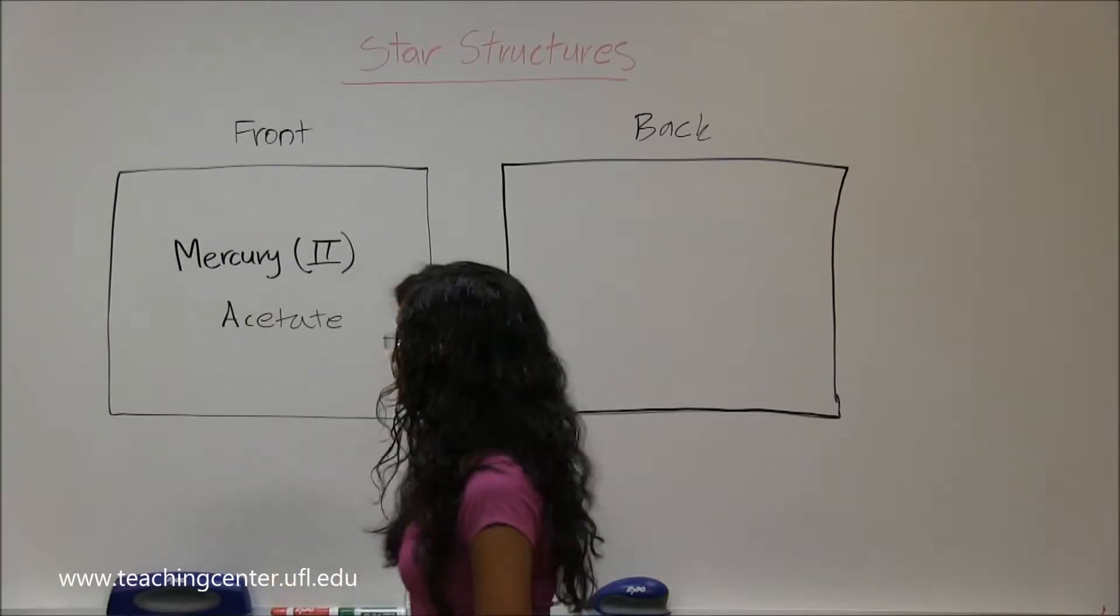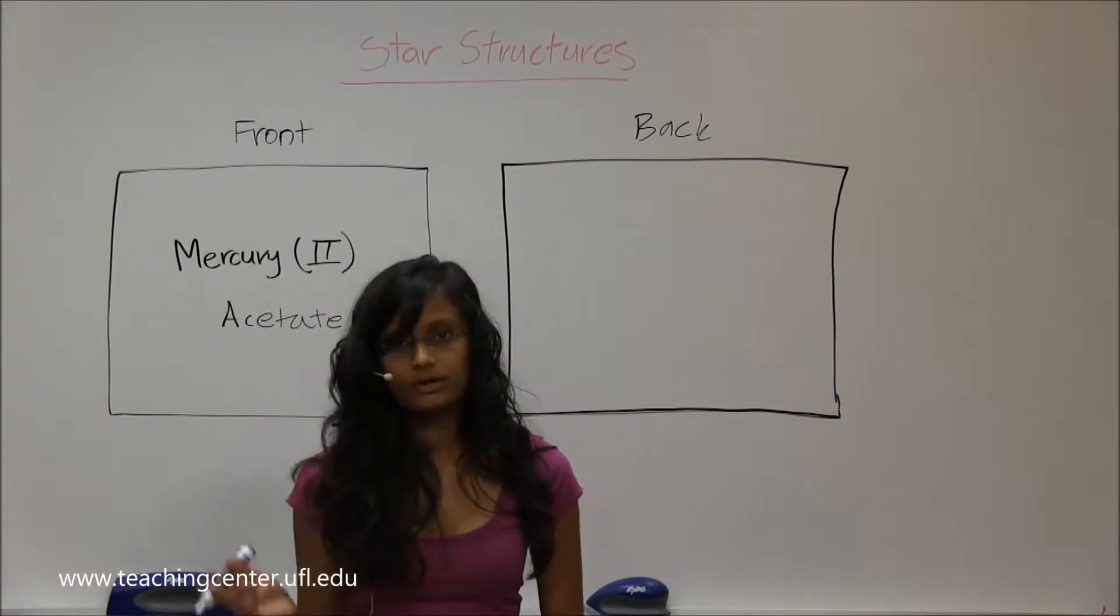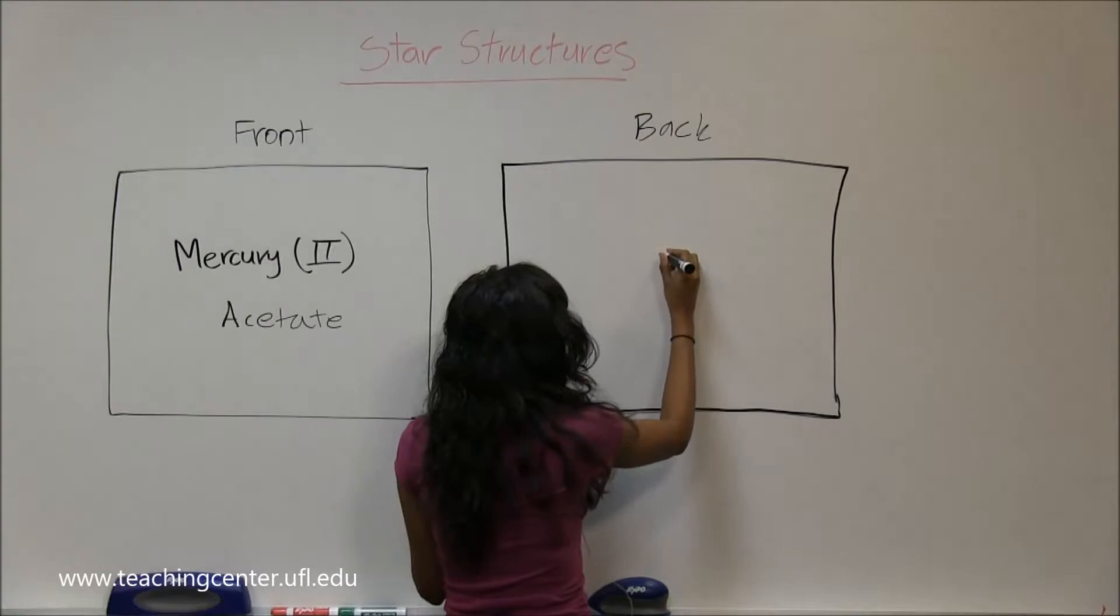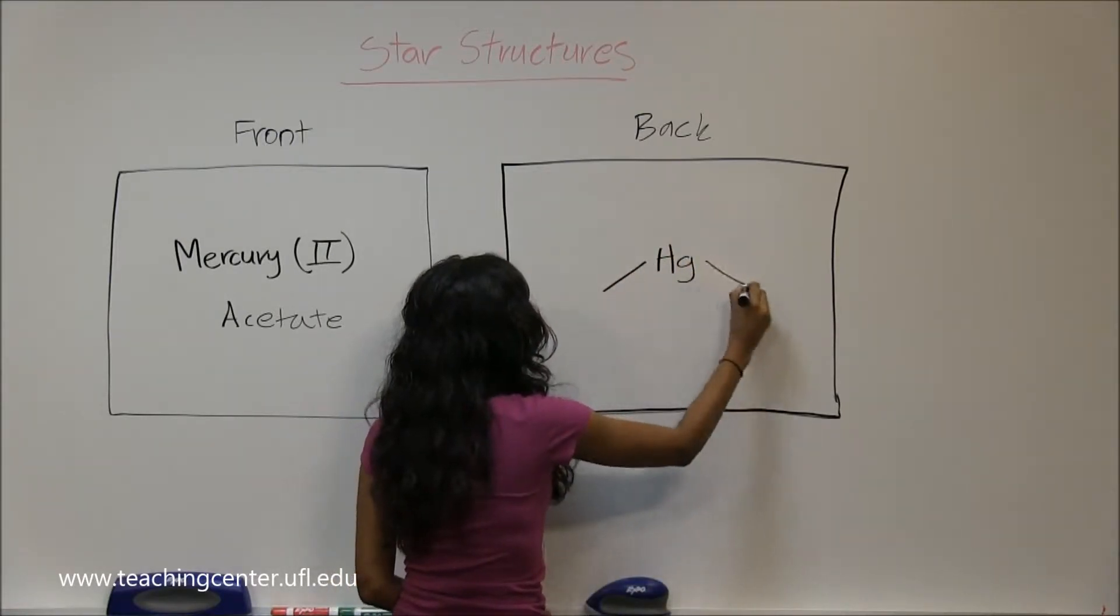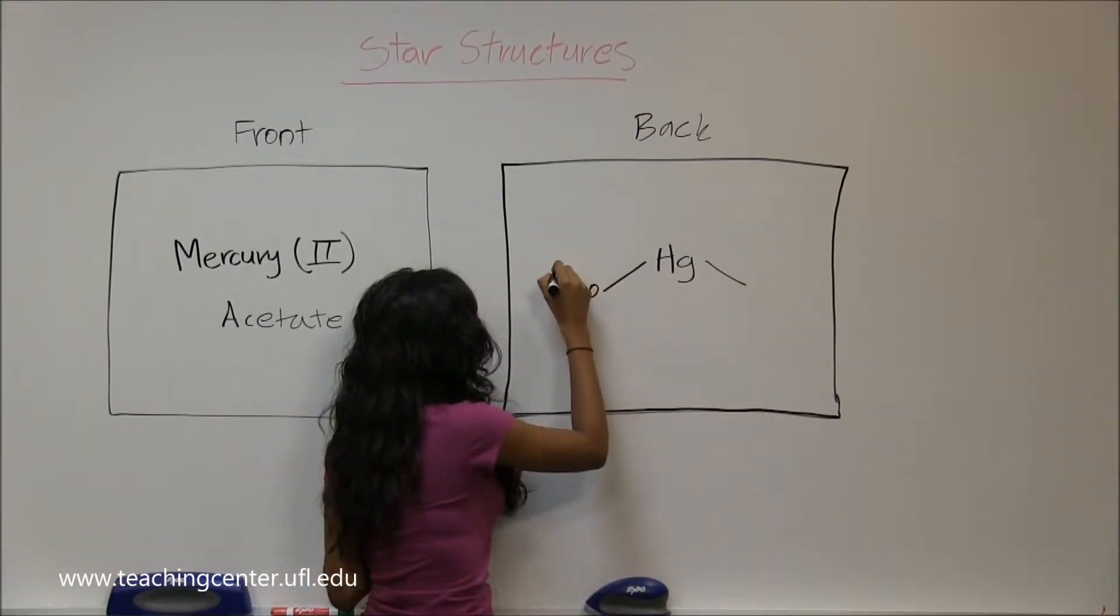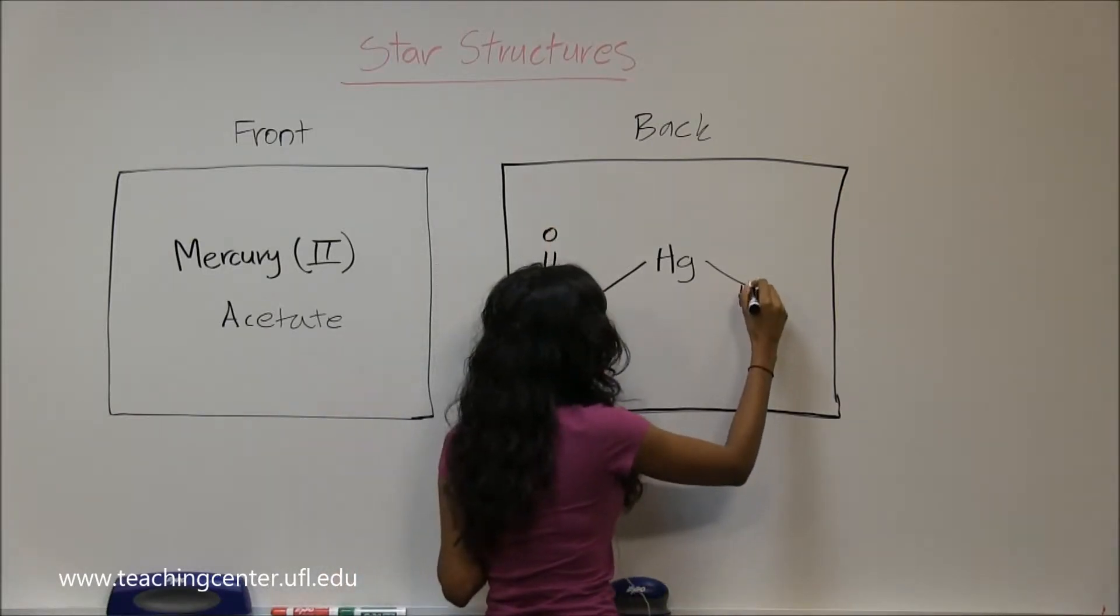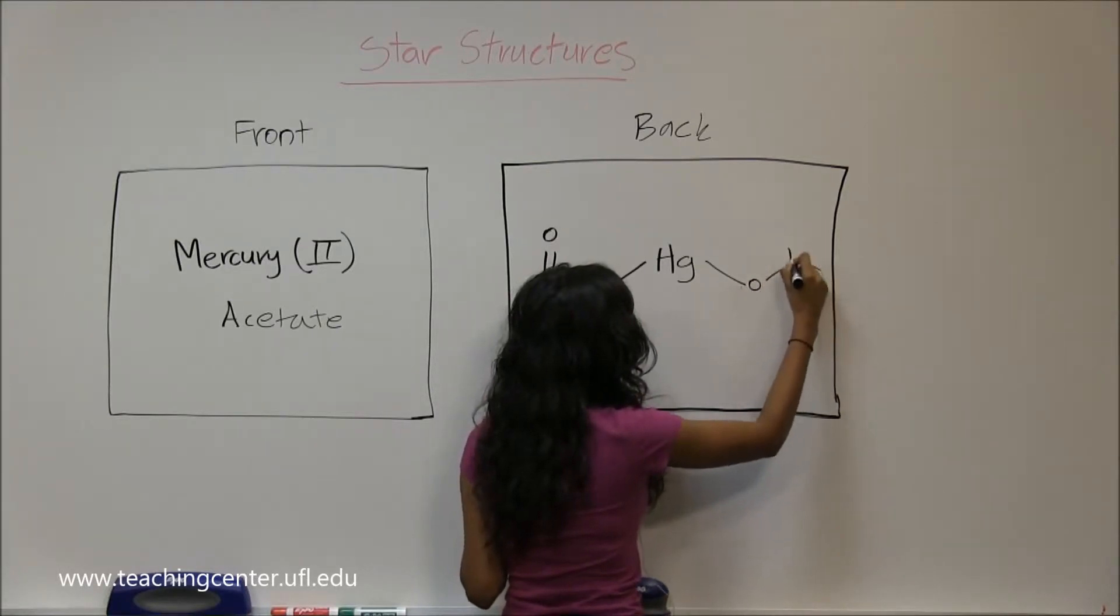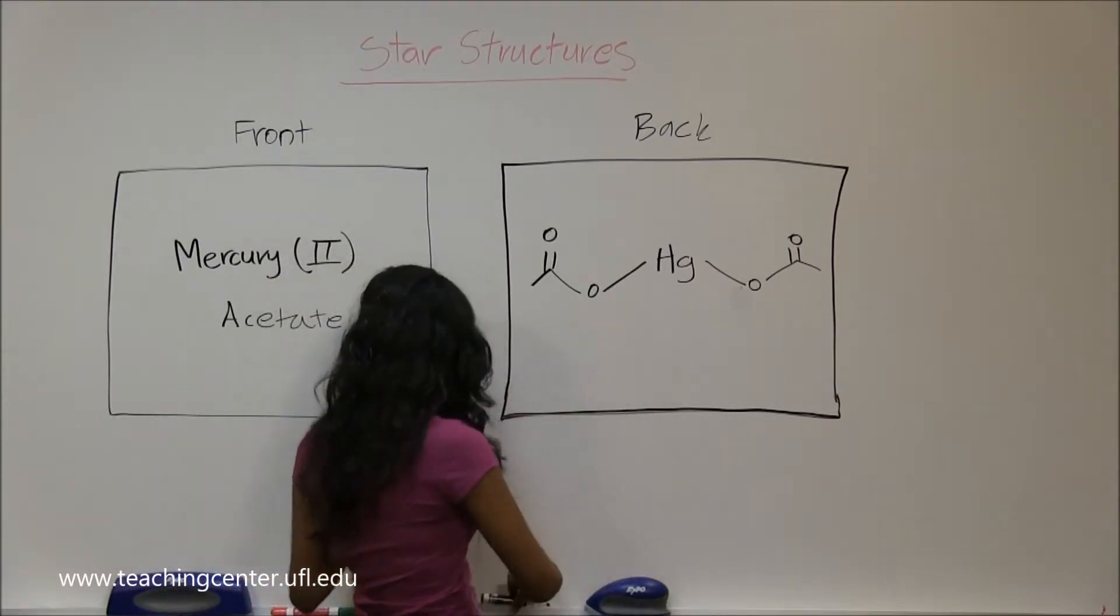All right, next one is mercury(II) acetate. This is another reagent that you're going to use in chapter six. Mercury means you have Hg and it's 2+. It's going to have two different things attached to it, and on both sides you're going to have this acetate group off of your mercury.